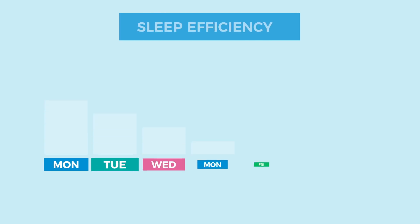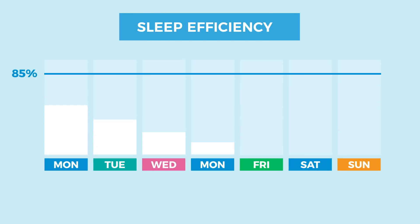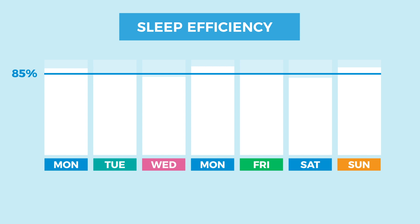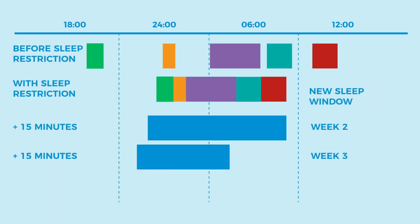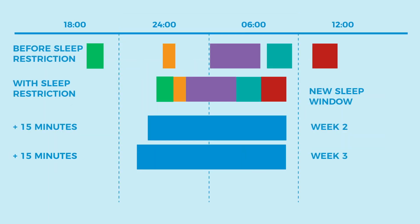If one week has gone by where you've had an average sleep efficiency of 85% or more, you can increase your sleep window by 15 minutes. Remember to insert these extra 15 minutes at your bedtime while the time you get out of bed remains the same, as we talked about in the previous module.